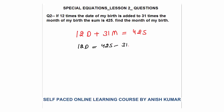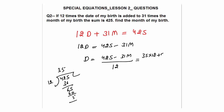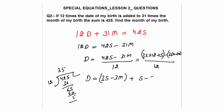Now, 12D equals 425 minus 31M, so D equals (425 minus 31M) divided by 12. Dividing 425 by 12: 12 times 35 is 420, remainder 5. So 425 equals 35 into 12 plus 5. And 31M can be written as 36M minus 5M. So D equals 35 minus 3M plus (5 minus 5M) divided by 12. Taking 5 common from the remainder term, we get (5 minus 5M) over 12.